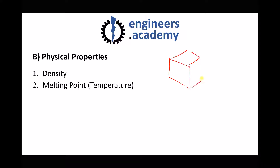With two different materials both one metre cubed, the material with high density will be heavier than the material with low density. Dense materials have very closely packed atoms, whereas lower density materials have much less closely packed atoms.